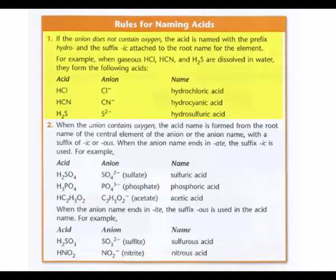That's the rules for naming acids. All right, let's see. If the anion does not contain oxygen, the acid is named with the prefix hydro. So these are binaries. Binaries up on top. So it starts with hydro, ends in -ic, and the word acid. So this would be hydrochloric acid. Hydrocyanide. So hydrocyanic acid. And this is hydrosulfuric acid.